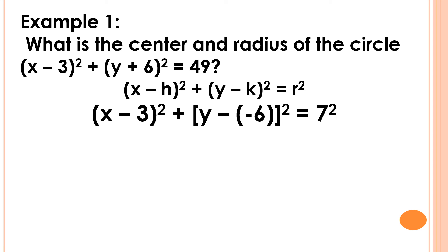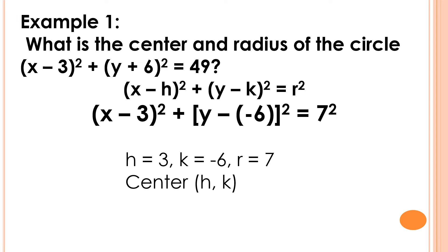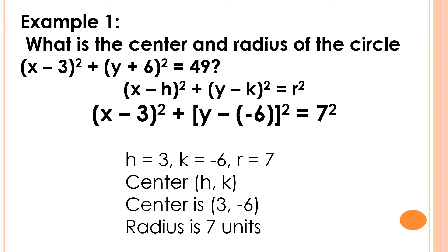49 is equal to 7 squared. Next step, we're going to determine the value of h, k, and r. So the value of h is 3, the value of k is negative 6, and the value of r is 7. Then we're going to determine the coordinates of the center of the circle, wherein the coordinates will be (h, k). Since the value of h is 3 and the value of k is negative 6, the center of the circle is (3, negative 6), and the radius of the circle is 7 units.